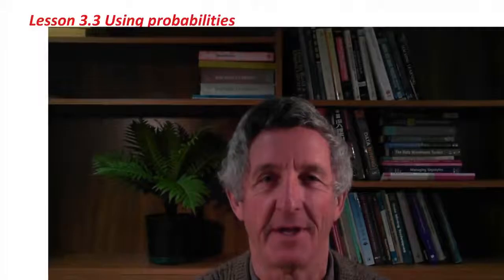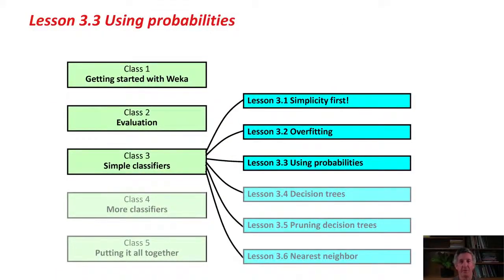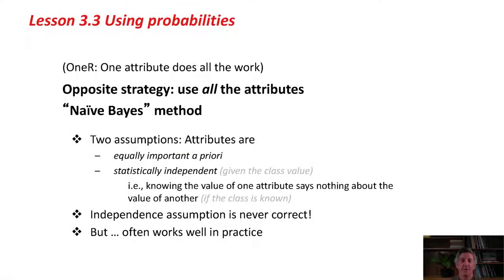Hi. This is Lesson 3.3 on using probabilities. It's the one bit of data mining with Weka where we're going to see a little bit of mathematics, but don't worry, I'll take you through it gently. The 1R strategy that we've just been studying assumes that there is one of the attributes that does all the work, that takes the responsibility of the decision. That's a simple strategy.